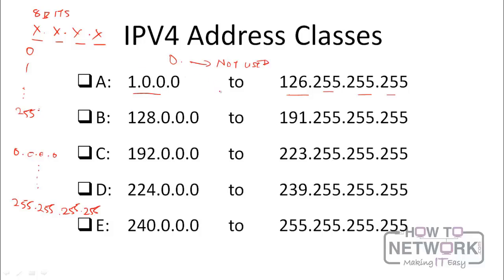We skipped address 127 — class A stops at 126 and class B starts at 128. The 127 range is reserved for localhost, used to test your TCP/IP stack. For example, 127.0.0.1 refers to the machine you're on. If you have a web server on your system, you can access it from a browser by typing 127.0.0.1.